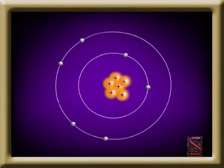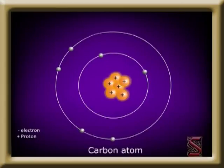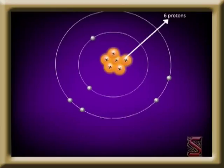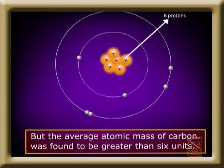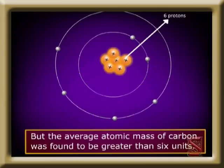Let us see this example. For carbon, an atom containing six protons, the atomic mass should be equal to six units. But the average atomic mass of carbon was found to be greater than six units.